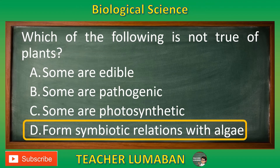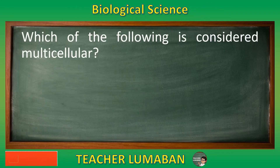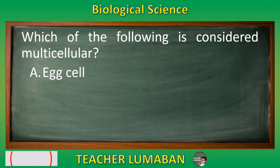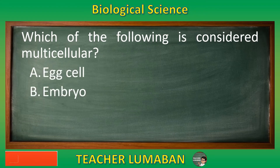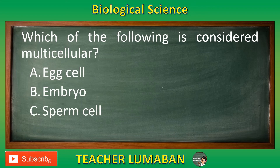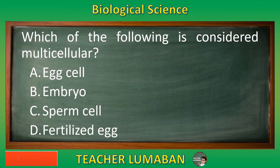Which of the following is considered multicellular? Letter A: Egg cell. Letter B: Embryo. Letter C: Sperm cell. Letter D: Fertilized egg.